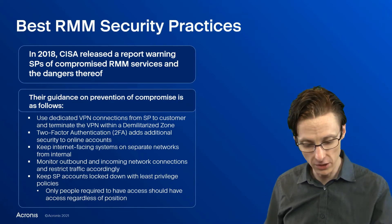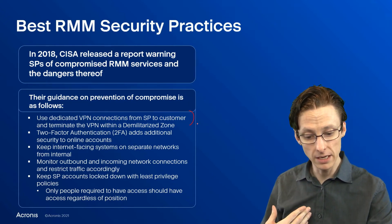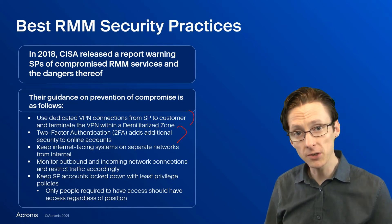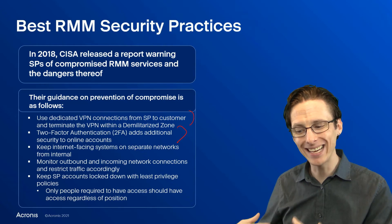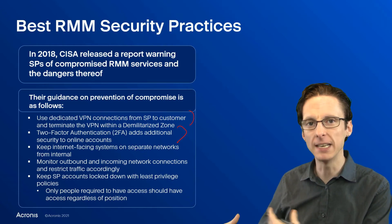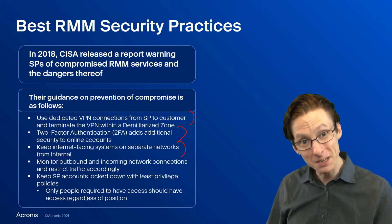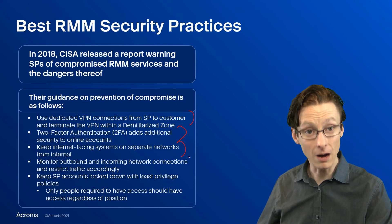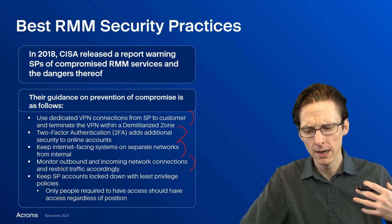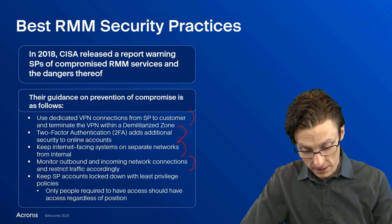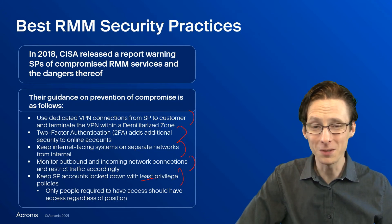Just to list off a few options: it could be using a dedicated VPN for RMM traffic, use of two-factor authentication so that even if an account is compromised — maybe the username and password — attackers still can't get access because they don't have that additional factor of authentication. It could be separating networks, network segmentation, and of course network monitoring is another way that we could detect attacks before they become too severe. Keeping service provider accounts locked down using the principle of least privilege is always going to be important too.